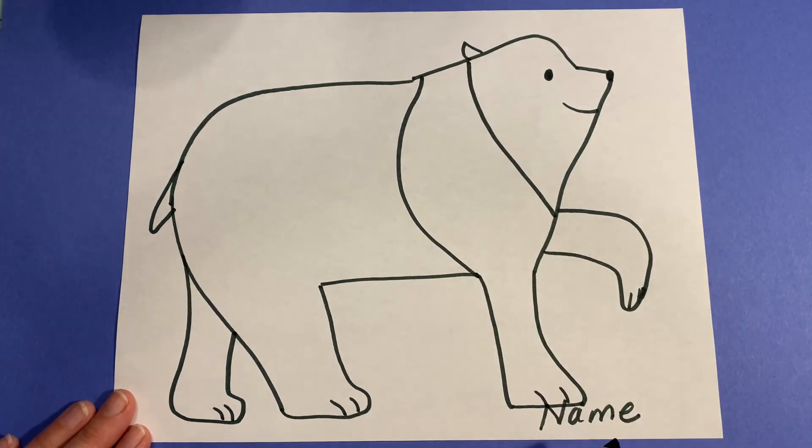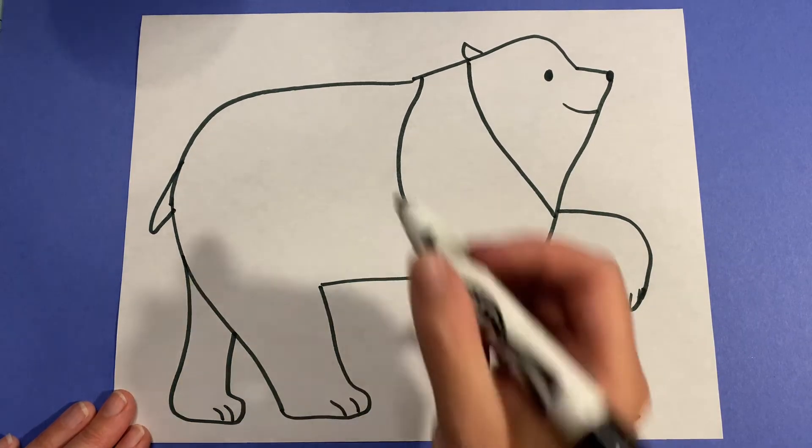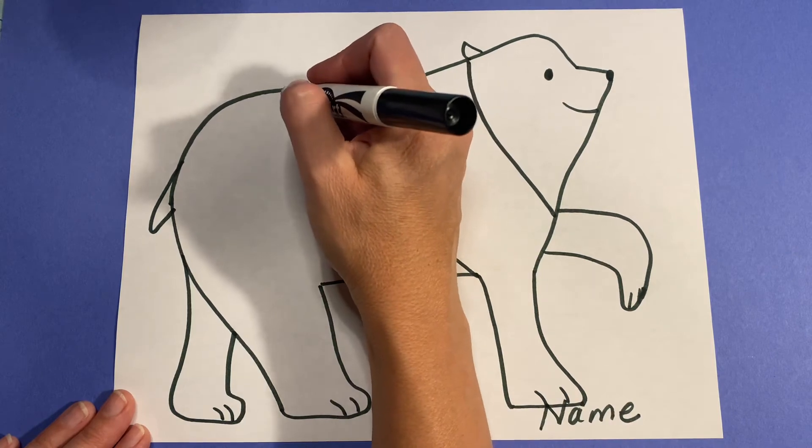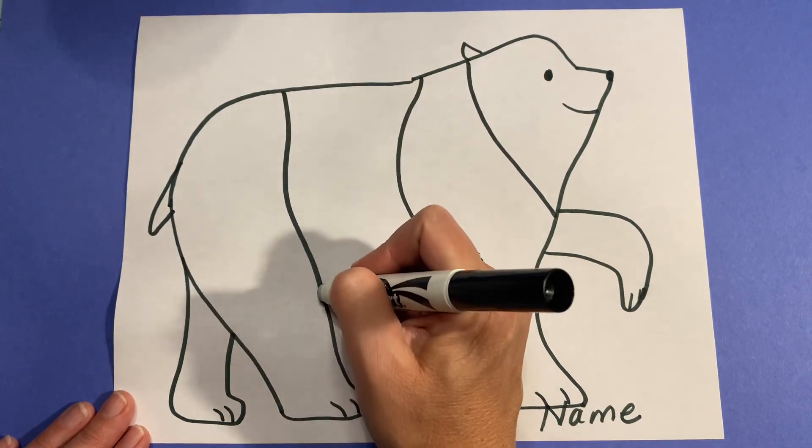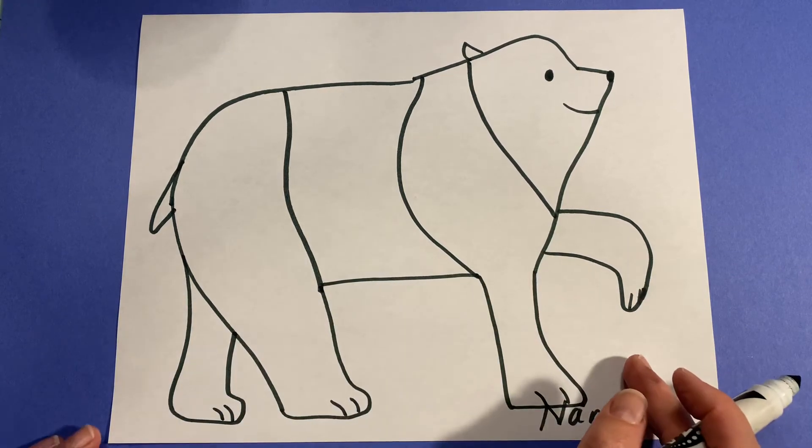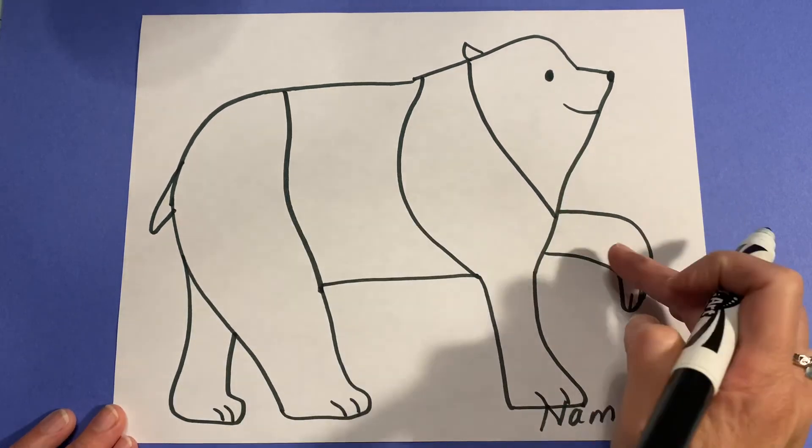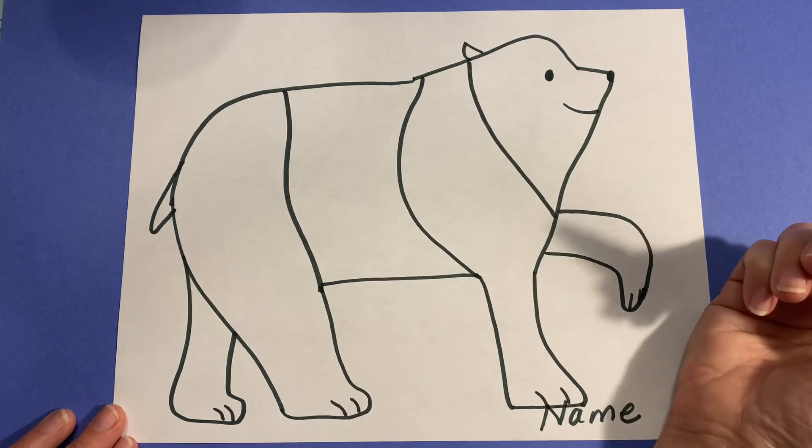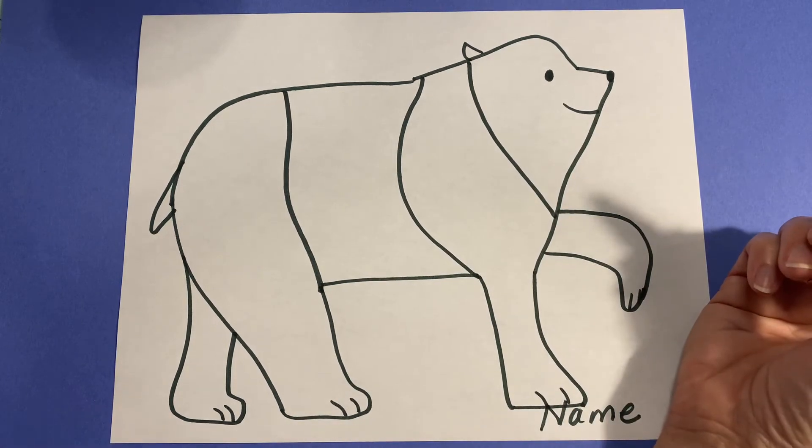And then I'm going to do a band that meets his other leg, and I'll come to his back and draw a wavy line here. And that'll give me quite a few sections to work with: one, two, three, four, five, six sections.